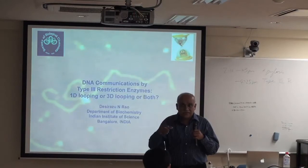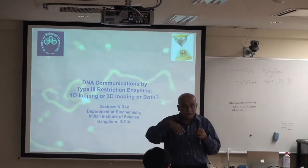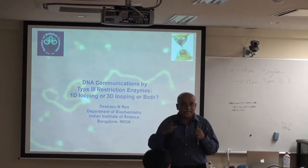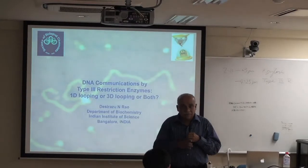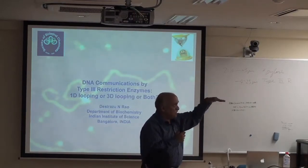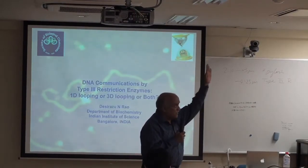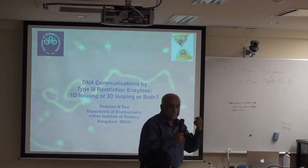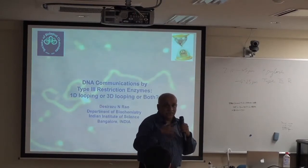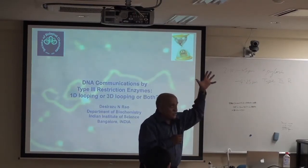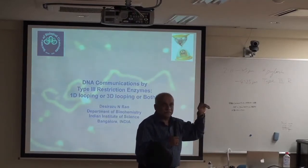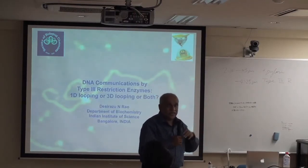When thinking about restriction enzyme evolution — whether type 1 gave rise to type 2, or type 2 gave rise to type 3 — it is very difficult to say. But if you arrange them as type 1, type 3, and type 2 and ask which is most efficient catalytically, the type 2 enzymes are the most efficient, with very high turnover numbers (Kcat). Type 1 enzymes are very slow, and type 3 enzymes come in between.